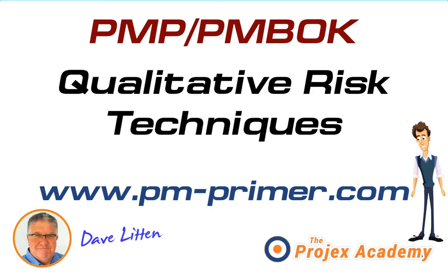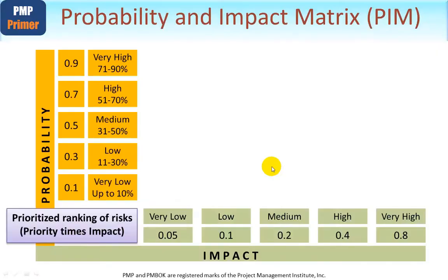Starting with the probability and impact matrix, the main purpose here is to evaluate risks and to determine their severity. Each risk will be prioritized within this matrix, and severity is the result of multiplying the probability scale against the impact scale.